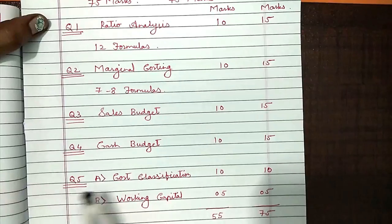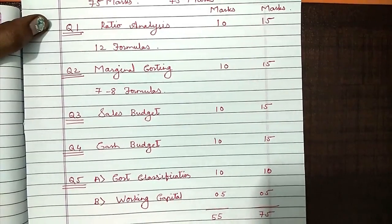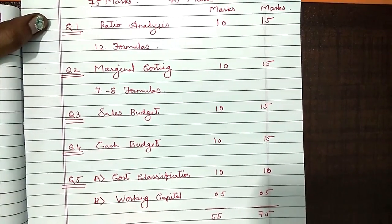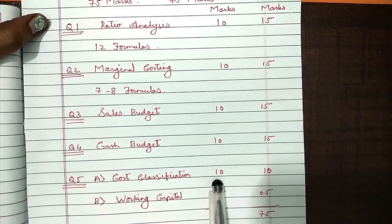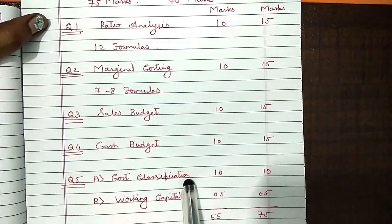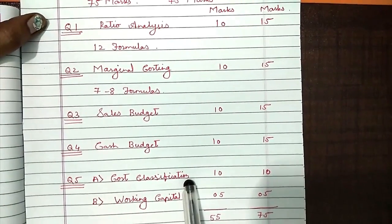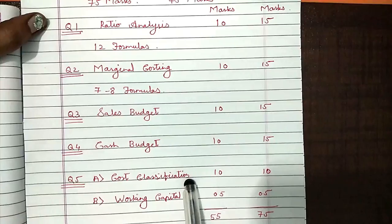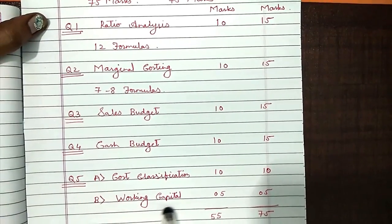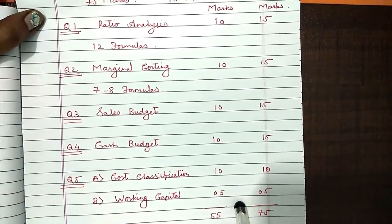For question number 5, there are 2 questions — one for 10 marks and another for 5 marks — and you have the internal option of short notes. We are not going to discuss short notes because that is not the smart way. For cost classification, you have 10 marks, and definitely each and every one can score 10 out of 10 because for writing 1 word you get 1 mark. That is how financial management of TYBMM works — it is not a scary subject, it is a scoring subject. For working capital, you only need to remember one format and scoring 5 out of 5 is very easy.